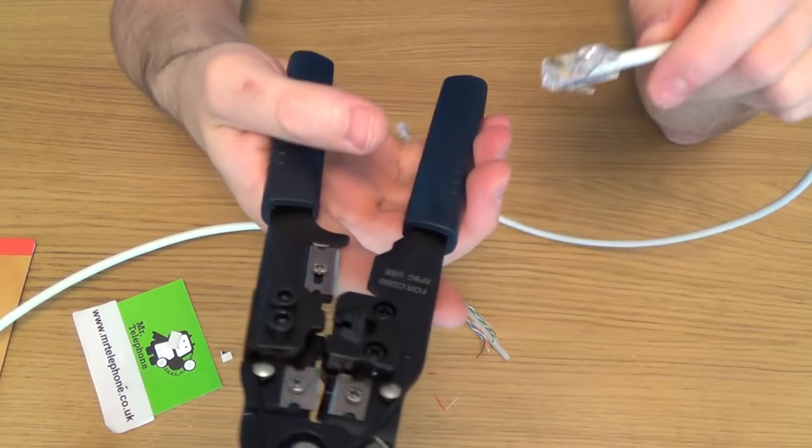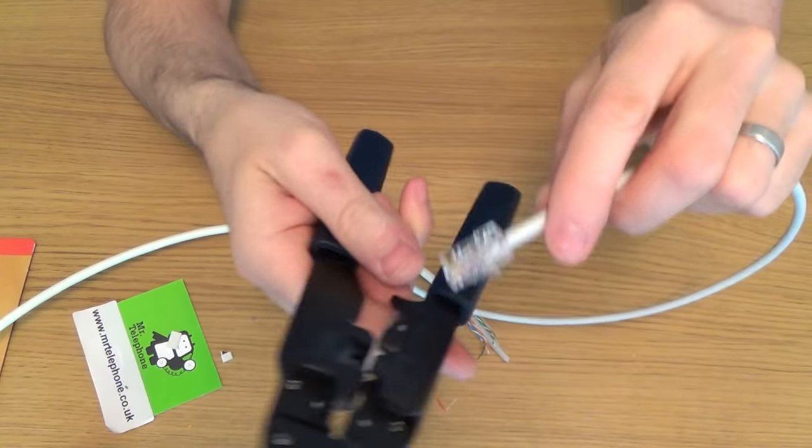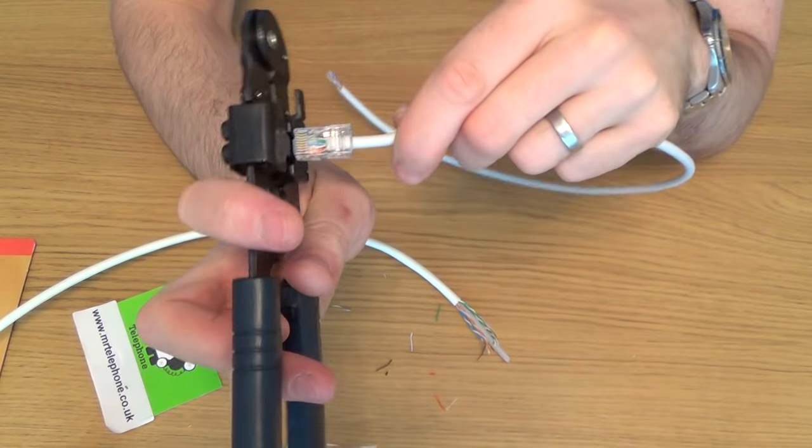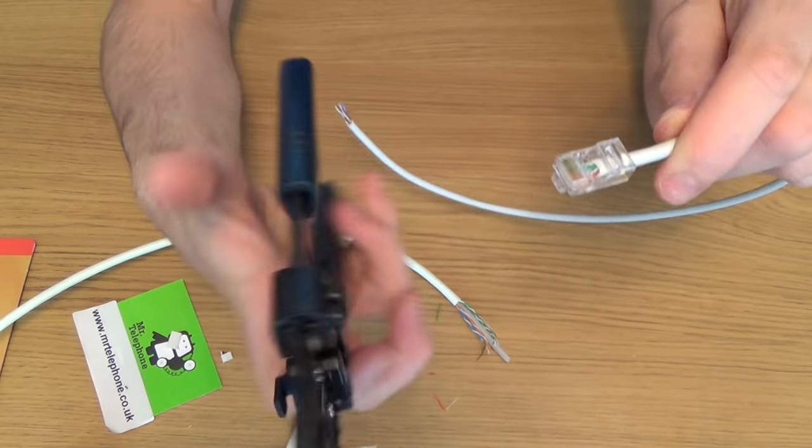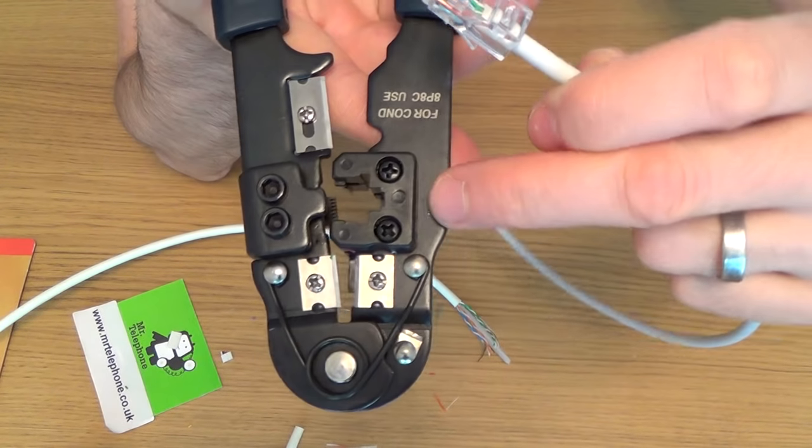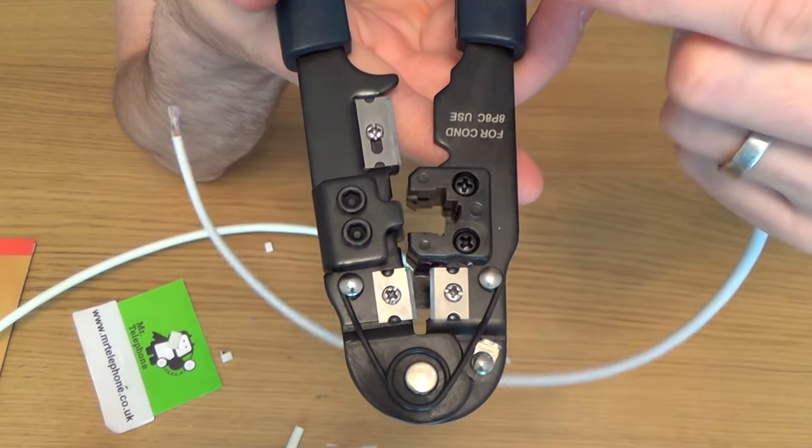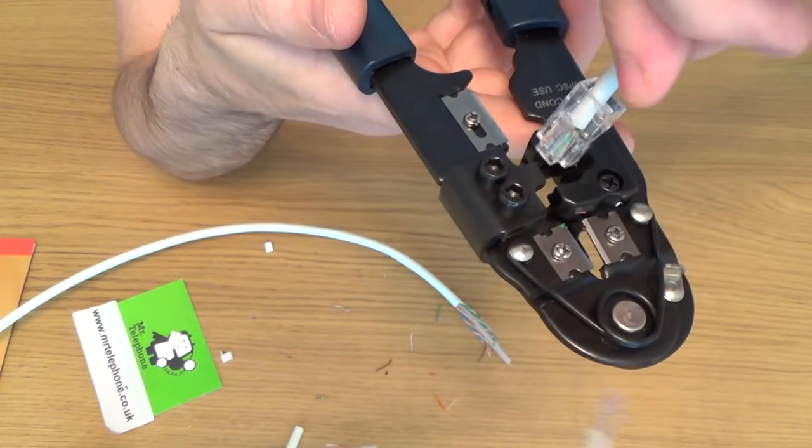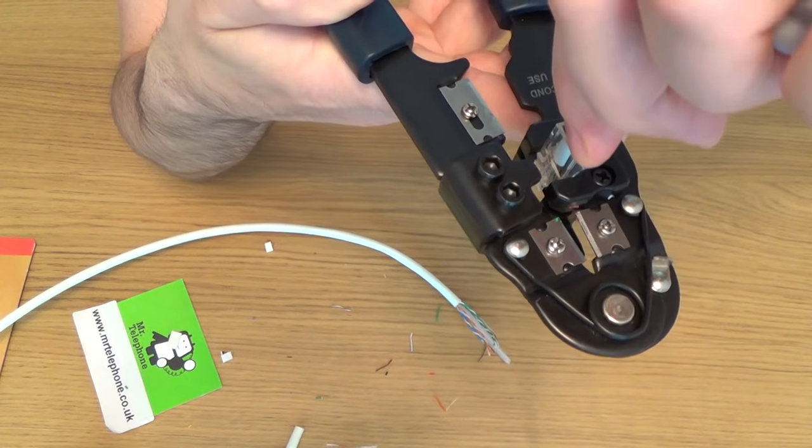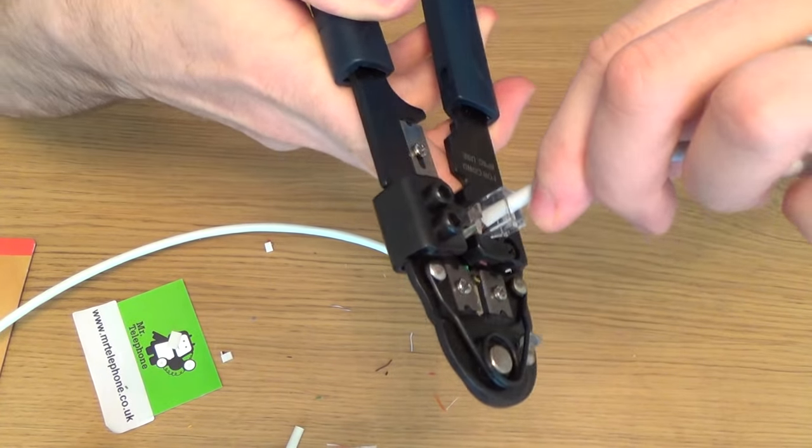You push them all the way into the end. And what you do now is nice and simple. You can't push it in the wrong way, because it doesn't let you, there's only one way it will go. So you push it in, and you can see where the little groove is taken out here for the retaining tab up the top. So again, you can't put it in the wrong way round, because it won't go in fully. That's the wrong way round.